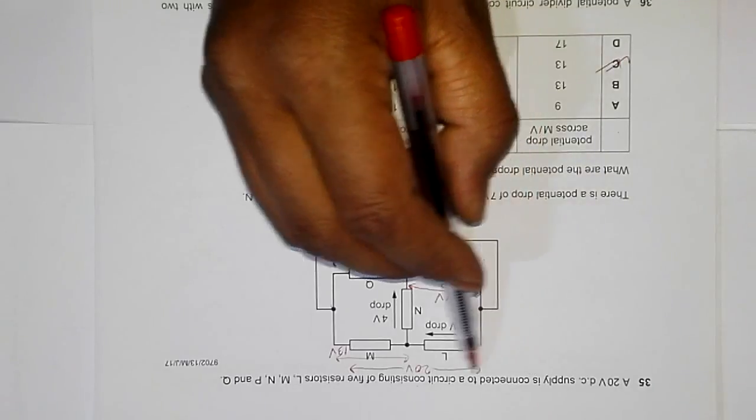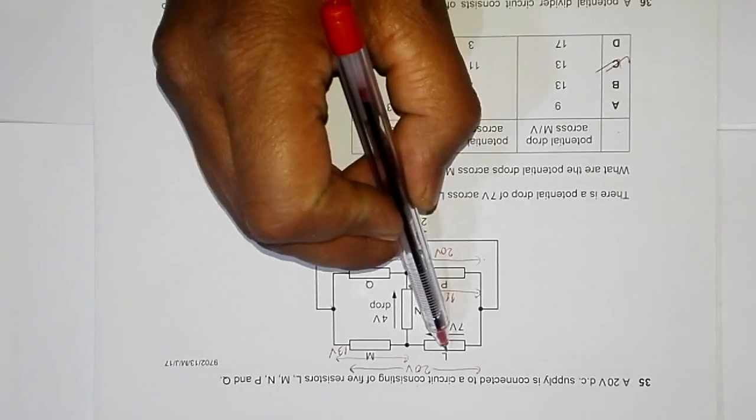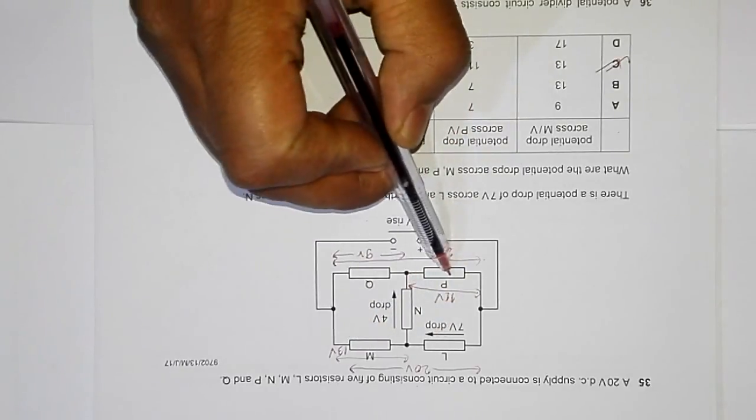This is the circuit consisting of five resistors: they are L, M, N, P and Q.